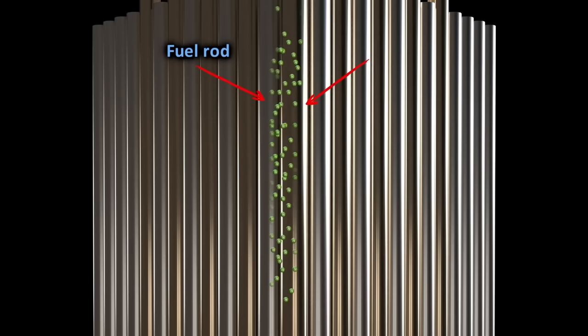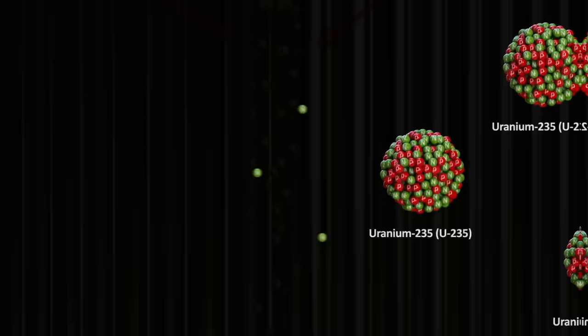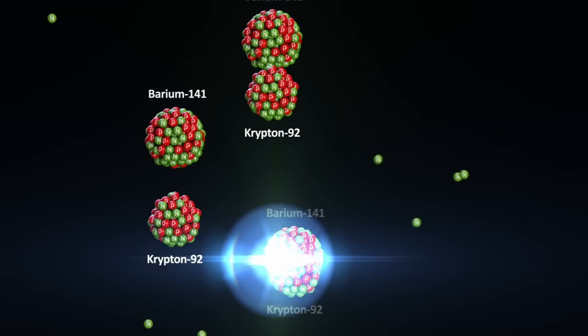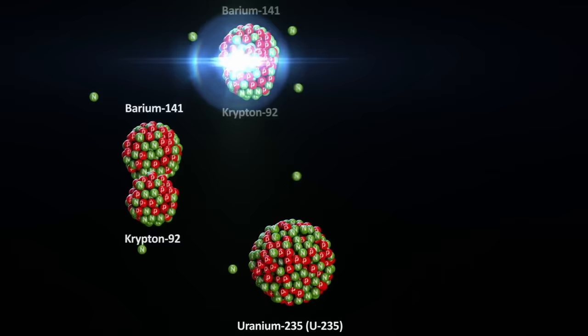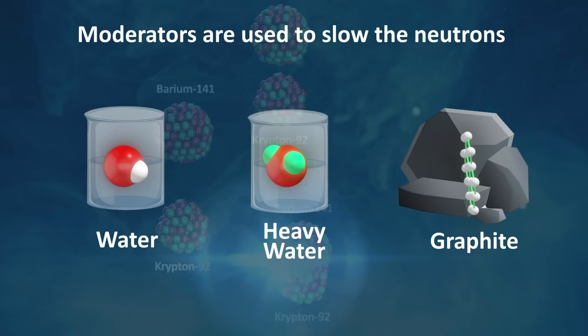You should also understand that when the U235 splits, the neutrons produced in this reaction are usually too fast and quickly dissipate. This makes them unavailable for the fission process. So a moderator is used to slow down the neutrons, so that they are more likely to cause fission in the fuel. These moderators are typically water, heavy water or graphite. Heavy water is where the hydrogen atoms in the water molecule are replaced by deuterium that have one extra neutrons in their nuclei. And that brings us to the last central component of the reactor. The cooling.